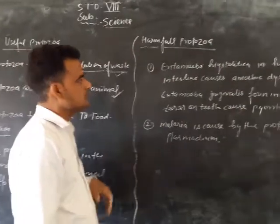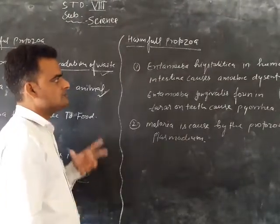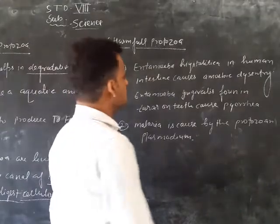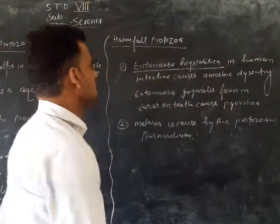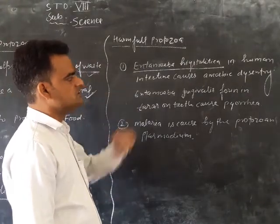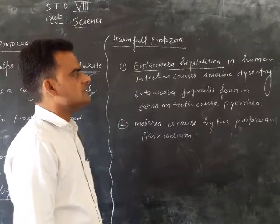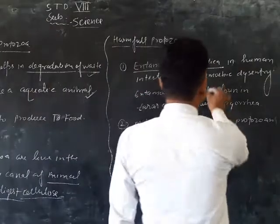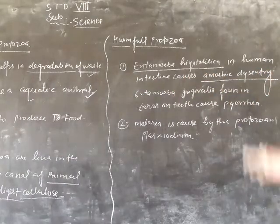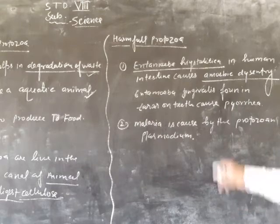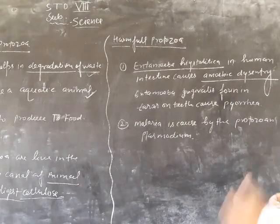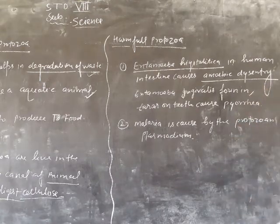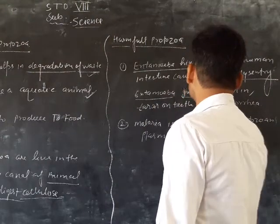Next is the harmful protozoans. The harmful protozoans include the Entamoeba histolytica. That is the Entamoeba histolytica, which is a harmful protozoan causing disease.